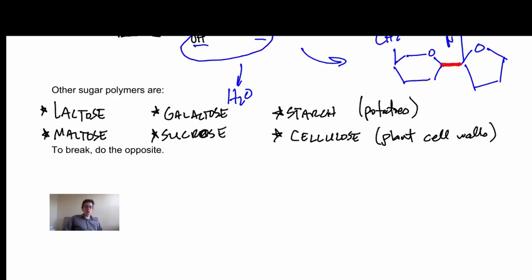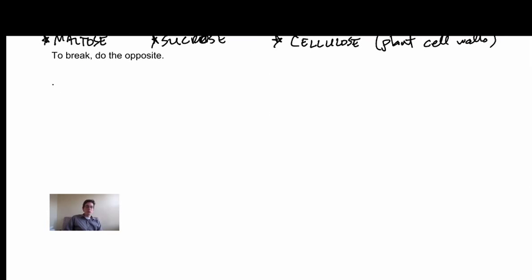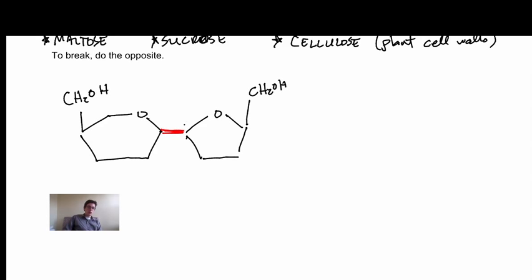And to break these molecules, we just do the opposite. Let me sketch out a sucrose real quick. So CH2OH, want to do a carbon which is in a ring, and then we've got a bond right here between this glucose and a fructose. And there's a little CH2OH here and a CH2OH.